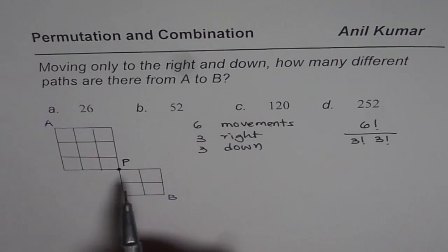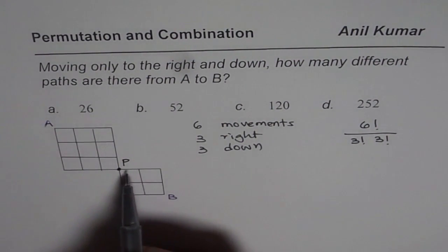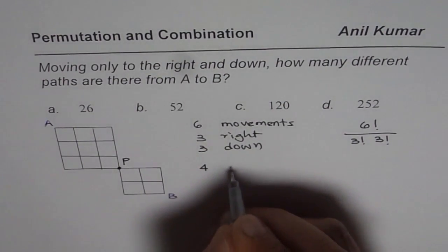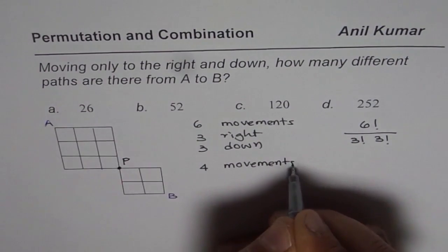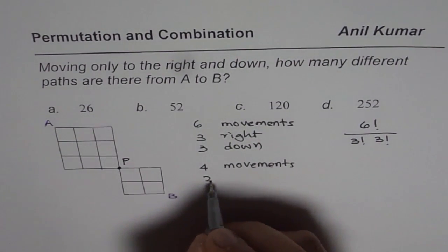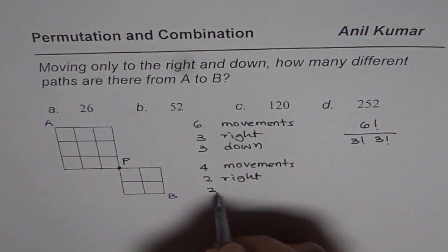Now, once you reach P, from P to B, there are 1, 2, 3, 4 movements. Four paths or four movements: two right, two down.